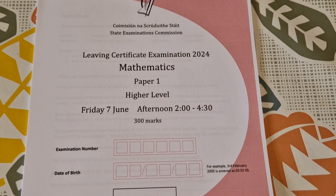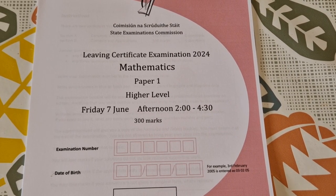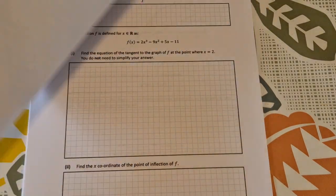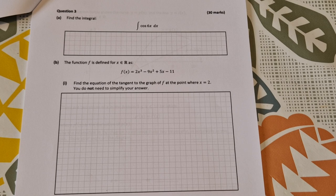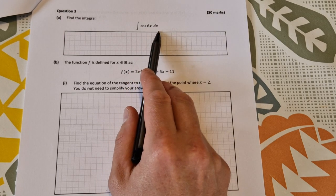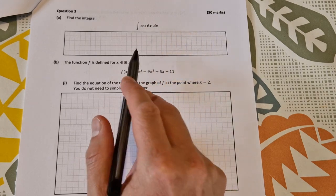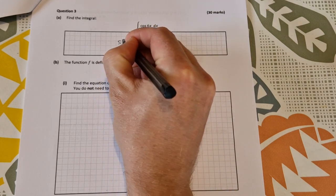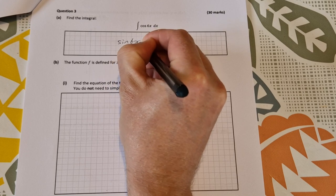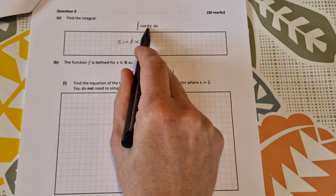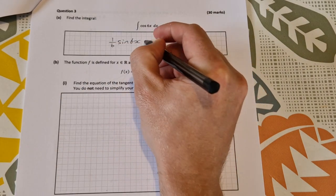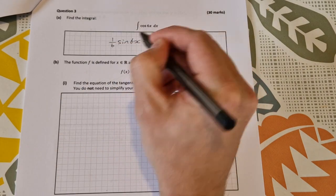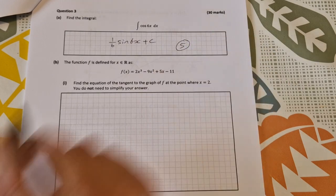This is the solution video to Leaving Certificate Higher Level Maths 2024, paper 1, question 3. Question 3 is our first calculus question. In part A, we're asked to find the integral of cos 6x dx. If we're integrating a trig function, cos becomes sine, so it's sine 6x, and then you multiply by 1 over 6. So stick 1 over 6 out in front, and it's indefinite integration, so don't forget about your plus C. That's a nice easy 5 marks.